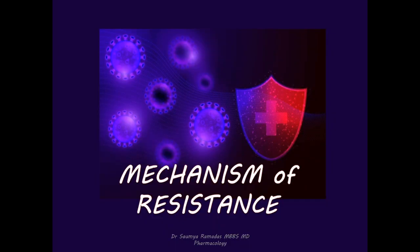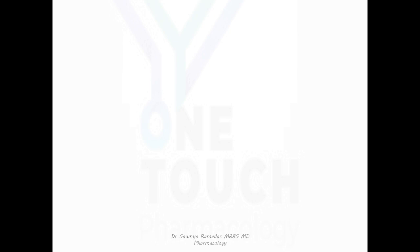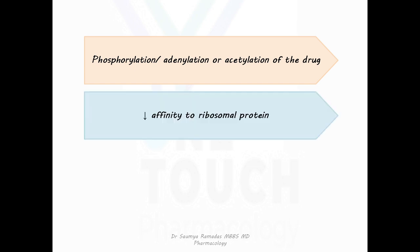Mechanism of resistance of aminoglycosides: The most important mechanism is phosphorylation, adenylation or acetylation of the drug. Decreased affinity to ribosomal protein and impaired transport of the drug inside the cell.